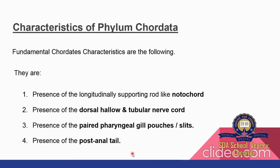The fundamental Chordata characteristics are: presence of a longitudinal supporting rod-like notochord; presence of a dorsal hollow and tubular nerve cord; presence of paired pharyngeal gill pouches or slits; and presence of a post-anal tail.